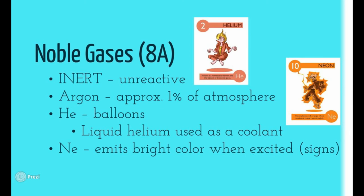The last group is noble gases. You need to know the definition: inert — meaning does not react, unreactive. Argon is approximately one percent of the atmosphere. We use helium in balloons; liquid helium is also used as a coolant, but we're running low on it. Neon emits a bright color when excited — hence the name neon signs or neon lights. It's actually using the element neon.